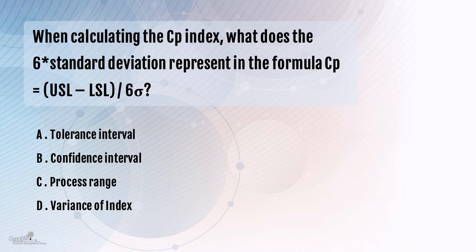The denominator essentially is talking about the process range. What is the range of variation which is currently there in the process? It is certainly not A, which is tolerance, which is there in the numerator.